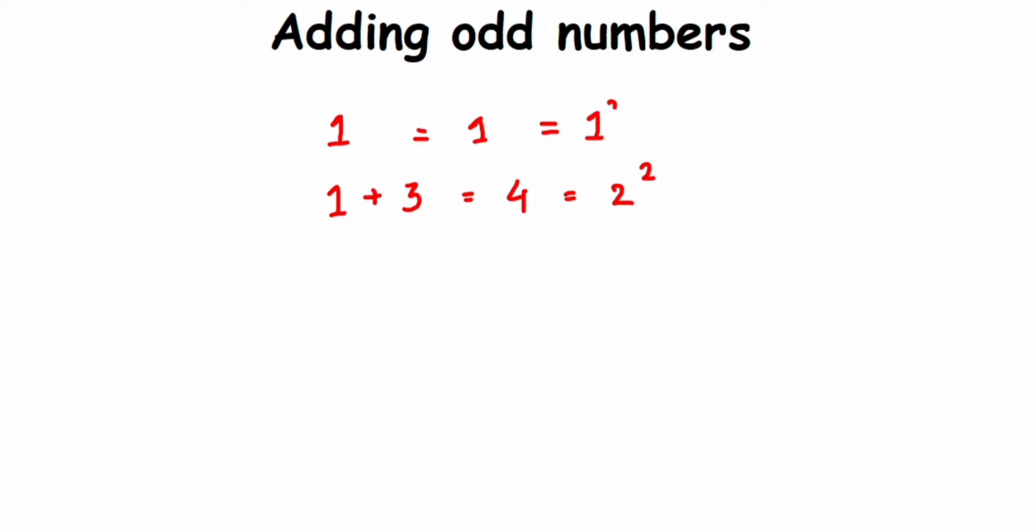I'll just do a small change here. I'll write 1 is equal to 1 and that is equal to 1 squared. Now I'm going to add the next odd number, so 1 plus 3 plus 5 is equal to 9, and 9 is equal to 3 squared.